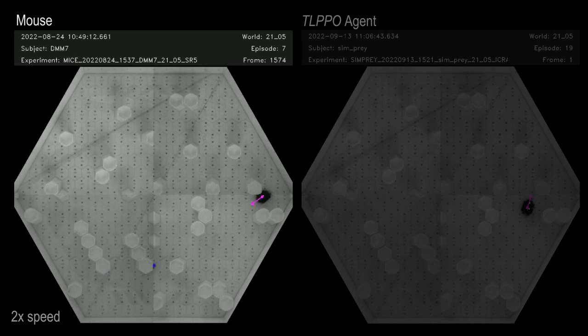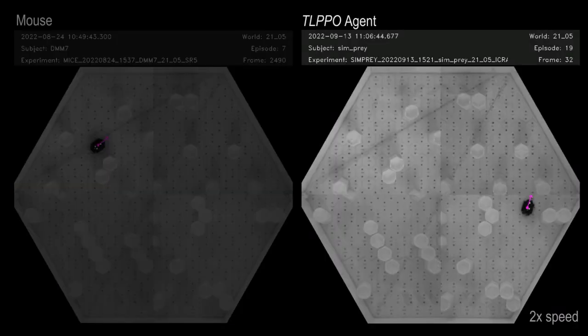Next, we directly compare the live mice to the TLPPO agent. Similar strategies emerge between the two subjects. For example, in this episode, the robot intercepts the mouse. This results in the mouse backtracking to the start cell. We believe it might be drawing the predator away from the end cell to open up a viable path.